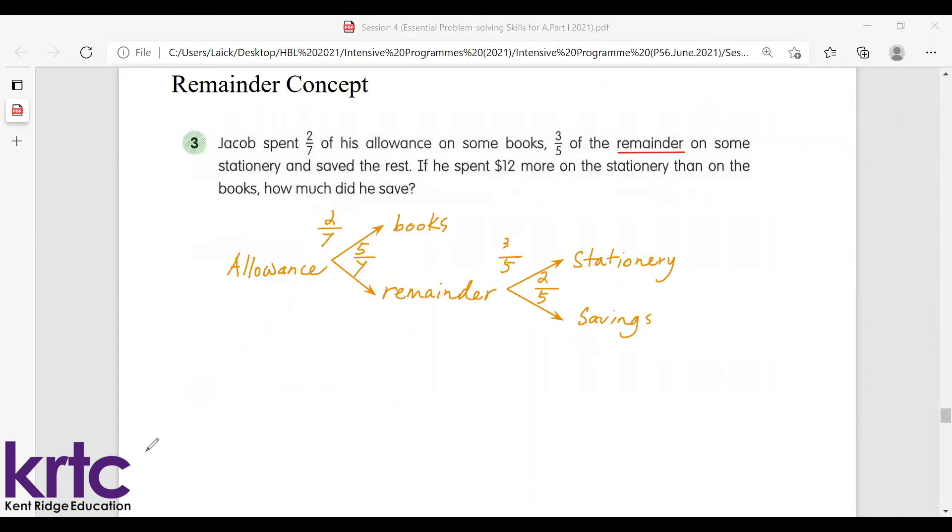In the last sentence you can see that he spent $12 more on the stationery than on the books.